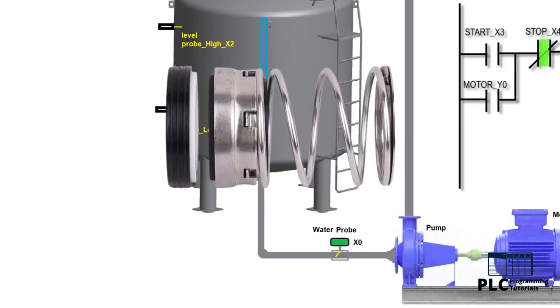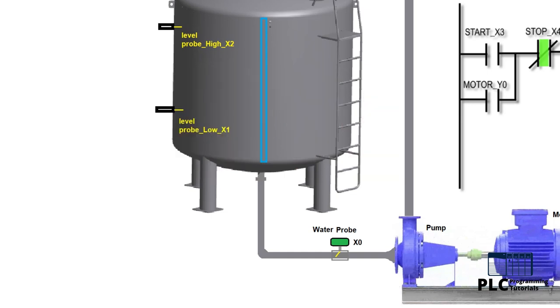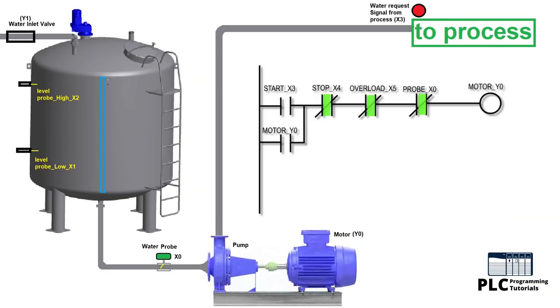So the pump should be stopped if there is no water in the suction line. Now let's see the ladder logic to control the pump.